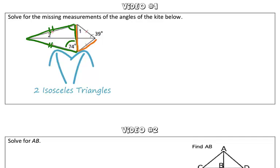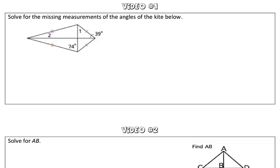We also have a second isosceles triangle here on the right-hand side. So a kite is made up of two isosceles triangles. When we're asked to solve for the measure of angles 1 and 2,